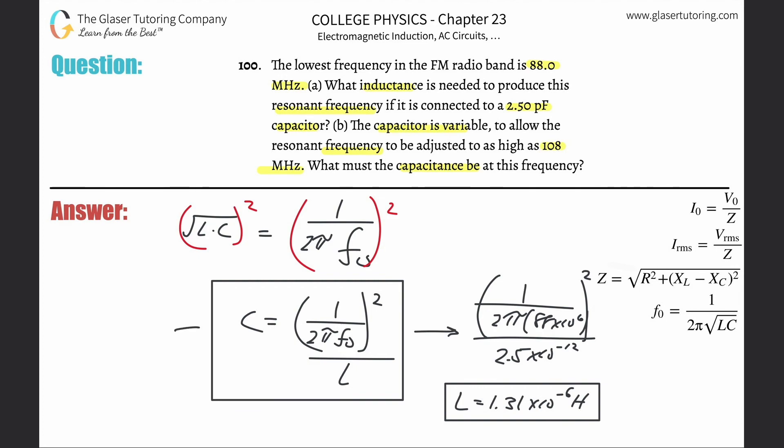So now this will become 1, it's going to stay the same numerator. No, it's not. Sorry, the frequency is changing. So this is going to be 1 divided by 2π times the new frequency here, which is 108 megahertz. So it's 108 times 10 to the sixth. That whole thing squared divided then by the inductance you just found of 1.31 times 10 to the minus sixth. I'm going to wind up using the exact value in the calculator when I do that.